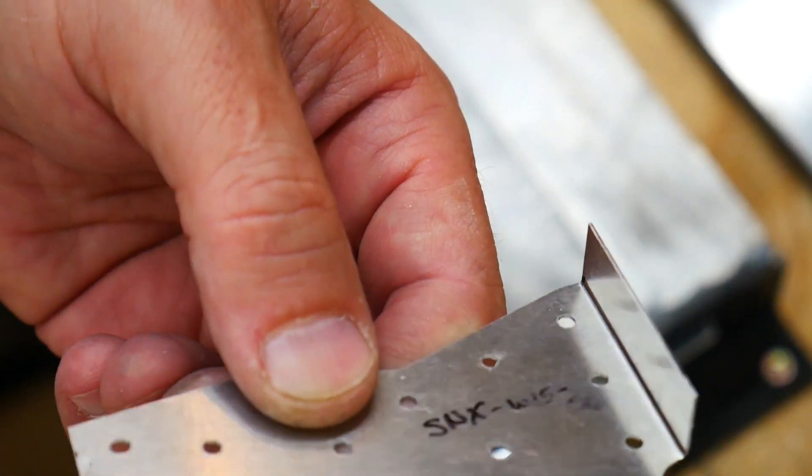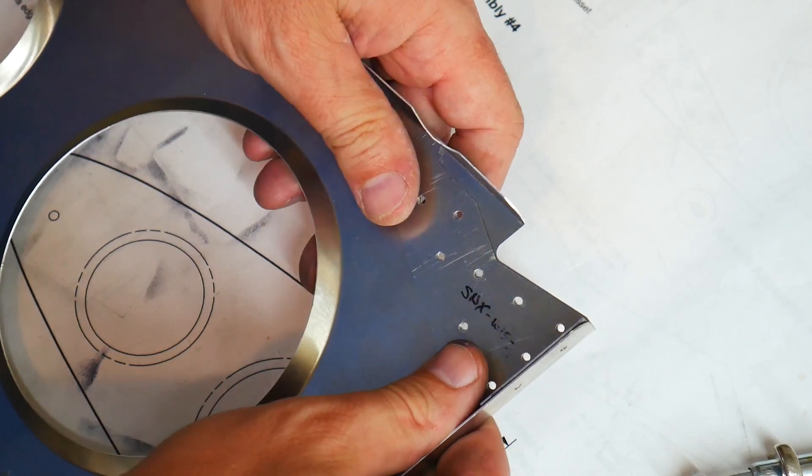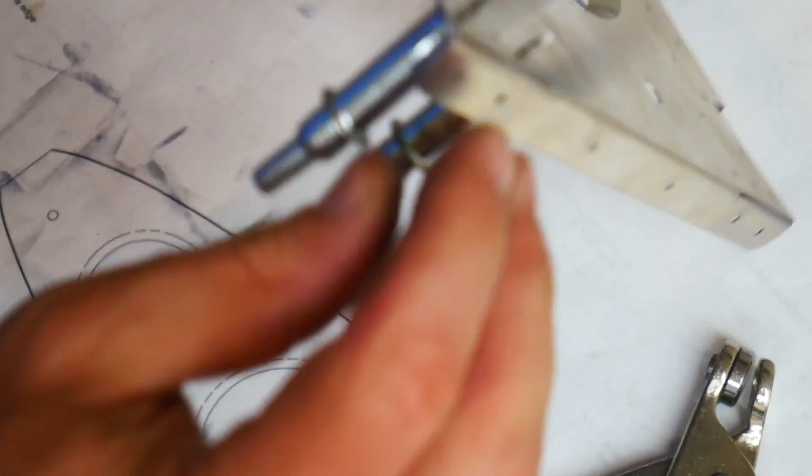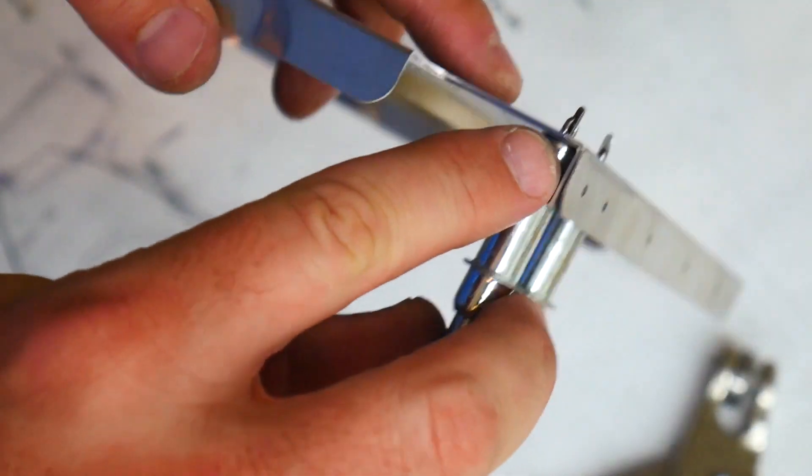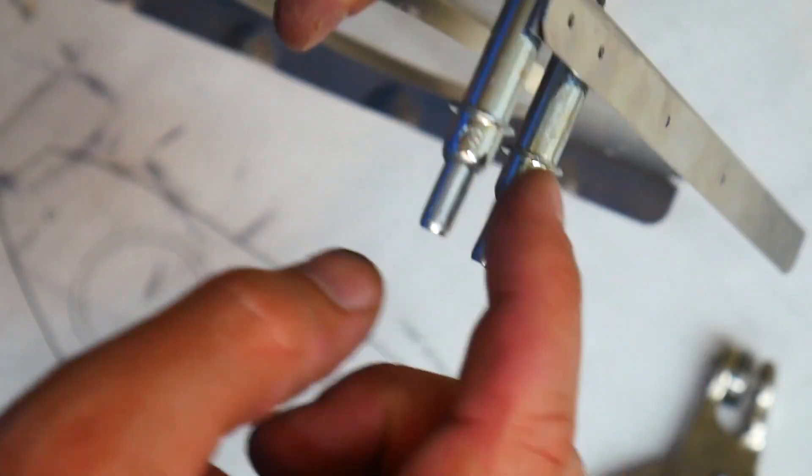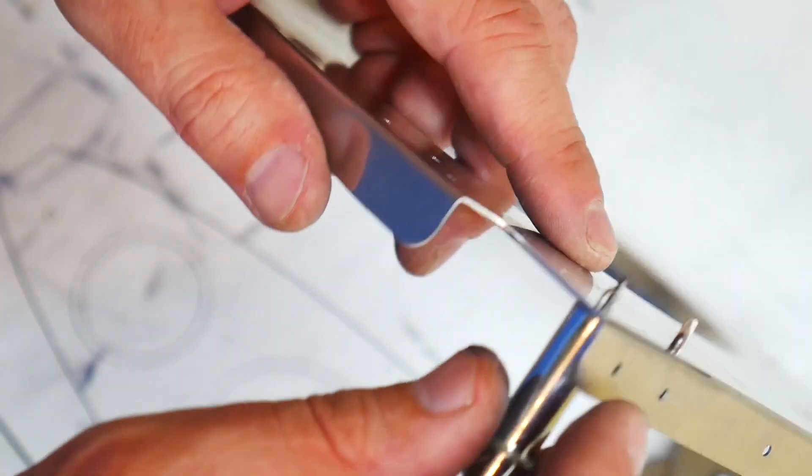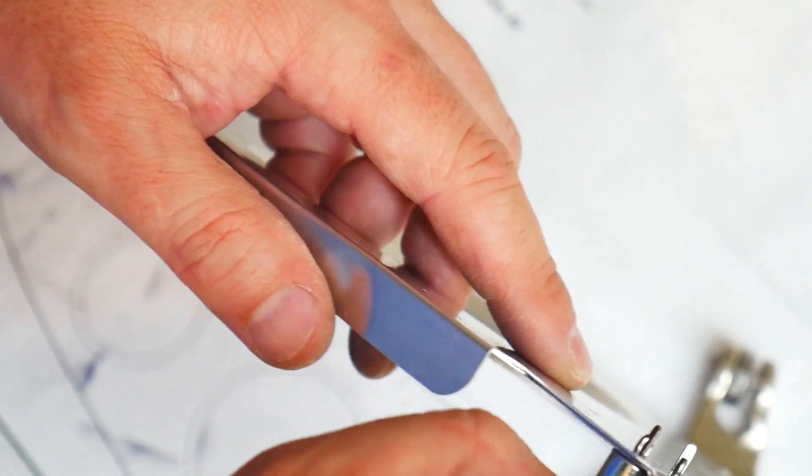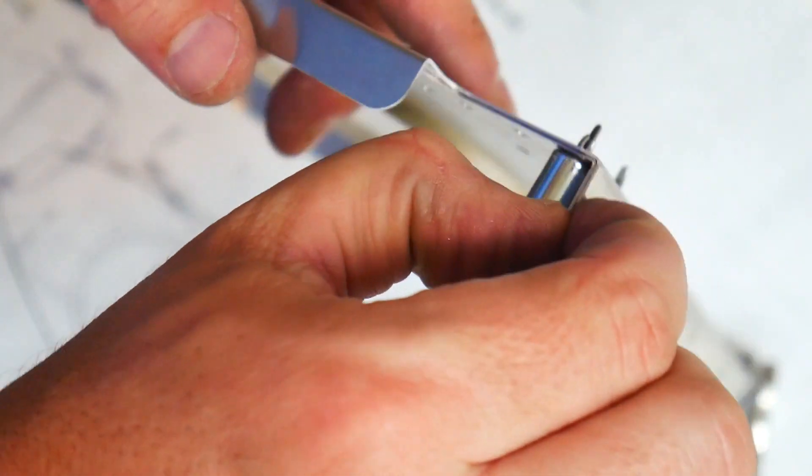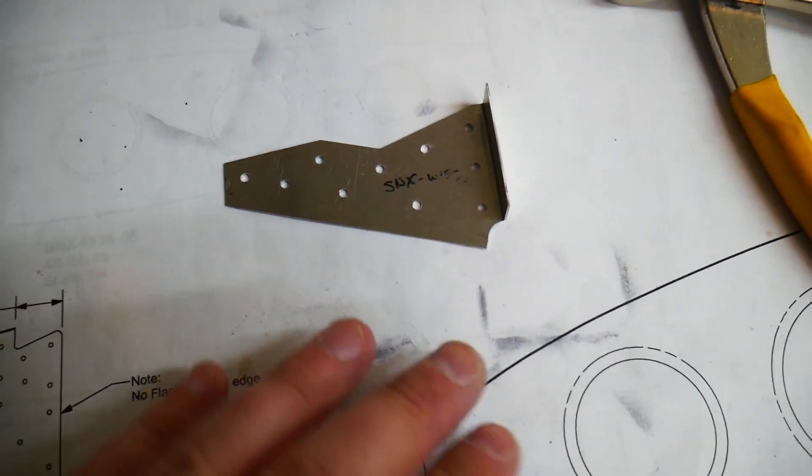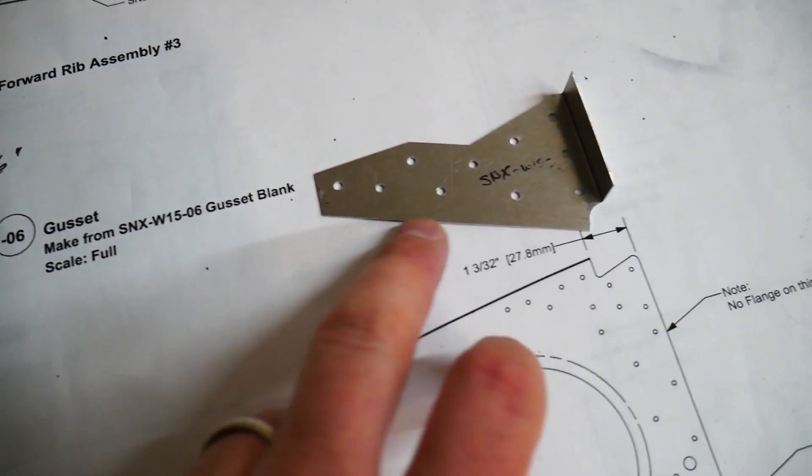You can see that it's just slightly this side of the line that we drew a second ago. Go ahead and put our Clecos back into place here. You can see that if you look at the bend line here it actually sits right inside of there. Now I've probably bent it a little bit more than 90 degrees so as I put this into place on the wing spar and riveted into place, that'll actually all pull together very nicely here. Leave no gap.